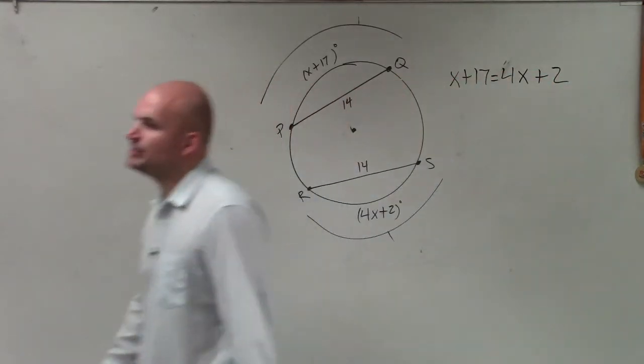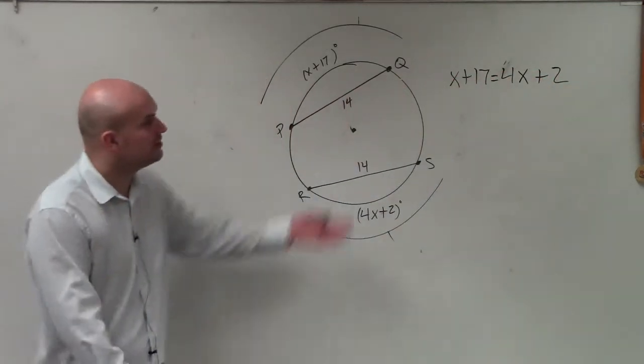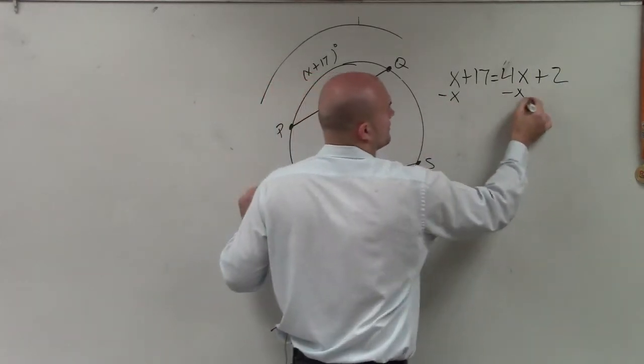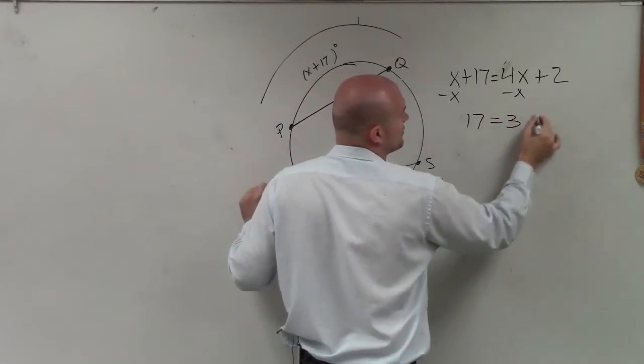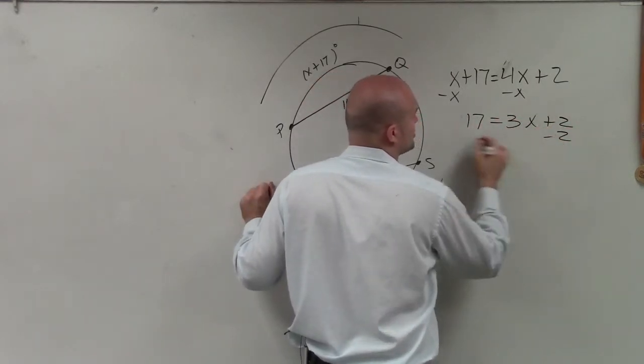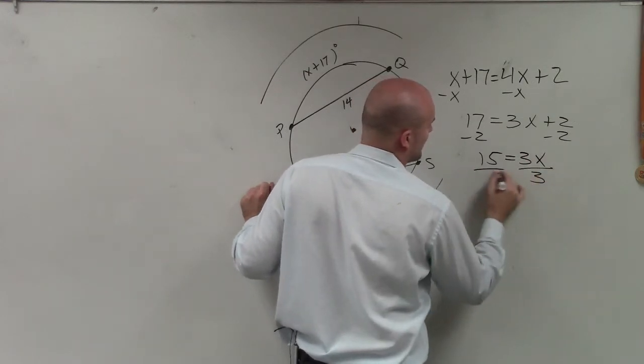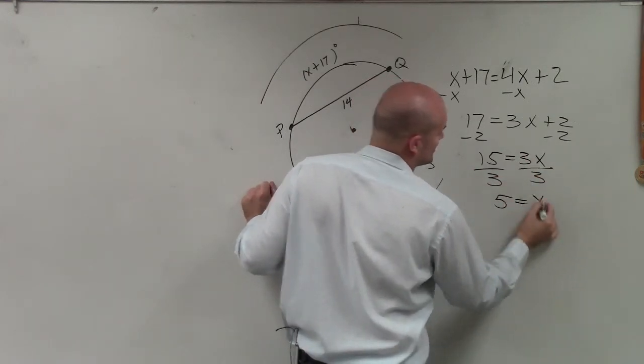I just need to set up an equation saying they're equal to each other and solve for x. I subtract x, so I have 17 equals 3x plus 2. Subtract 2, 15 equals 3x. Divide by 3, 5 equals x.